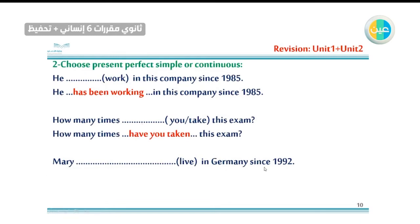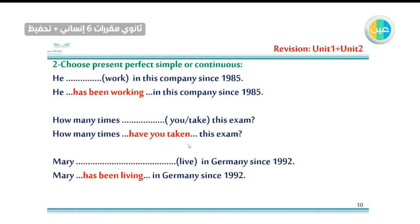'Mary live in Germany since 1992.' Yes — it's duration. So we go with present perfect continuous. Mary + has + been + verb with -ING. Mary has been living in Germany since 1992. Notice that 'live' ends with E — delete the E, then add -ING. Living.